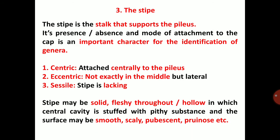The stipe may be solid, fleshy throughout, or hollow, in which the central cavity is stuffed with a pithy substance. The surface may be smooth, scaly, pubescent, or pruinose. In some mushrooms a milky ooze is present.